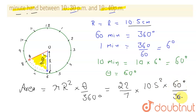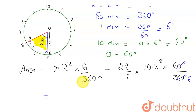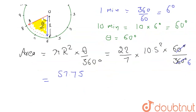Simplifying: 60 divided by 360 gives 1 over 6. Calculating 10.5 squared and simplifying the expression, the area comes out to be 57.75 centimeters squared. The units are in centimeter square since the length of the minute hand is in centimeters. The answer is 57.75 cm².